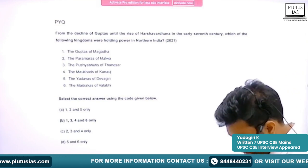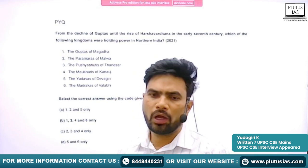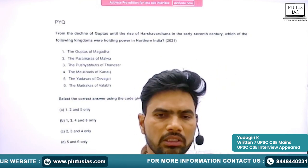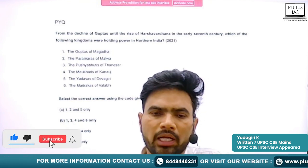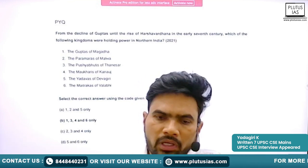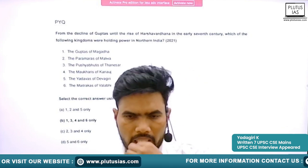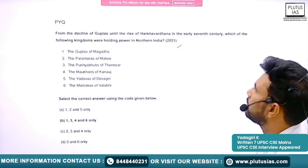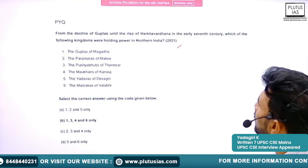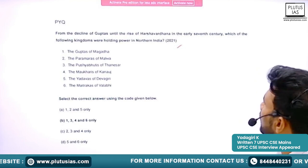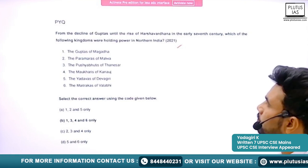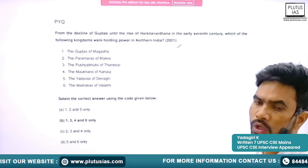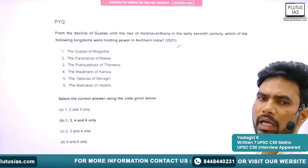This is about the Gupta Empire — mostly focused on chronology and some aspects of administration. With this knowledge you will be in a position to eliminate options and arrive at answers in the prelims examination. We will now see some questions asked from this topic in previous exams. The first question from 2021 asks: 'From the decline of the Guptas until the rise of Harshavardhana in the early seventh century, which kingdoms were holding power in northern India?'